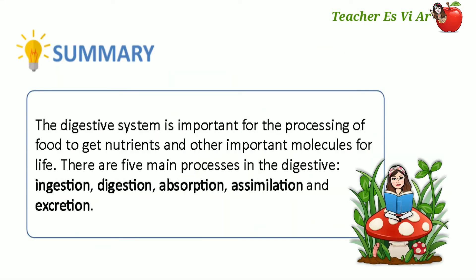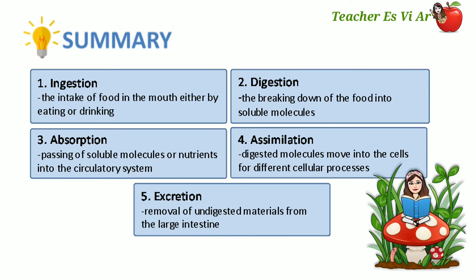The digestive system is important for the processing of food to get nutrients and other important molecules for life. There are five main processes: ingestion, digestion, absorption, assimilation, and excretion. Ingestion is the intake of food in the mouth either by eating or drinking. Digestion is the breaking down of food into soluble molecules. Absorption is the passing of soluble molecules or nutrients into the circulatory system. Assimilation is the process by which digested molecules move into the cells for different cellular processes. And excretion is the removal of undigested materials from the large intestine.